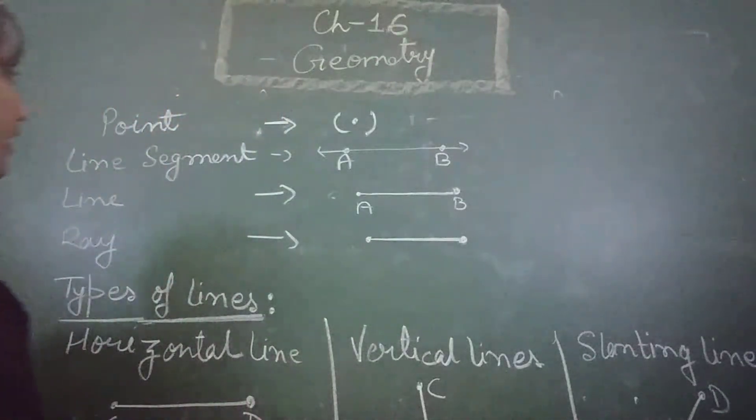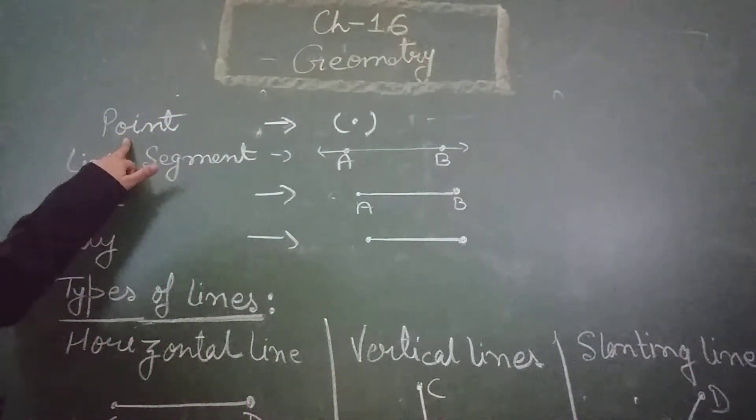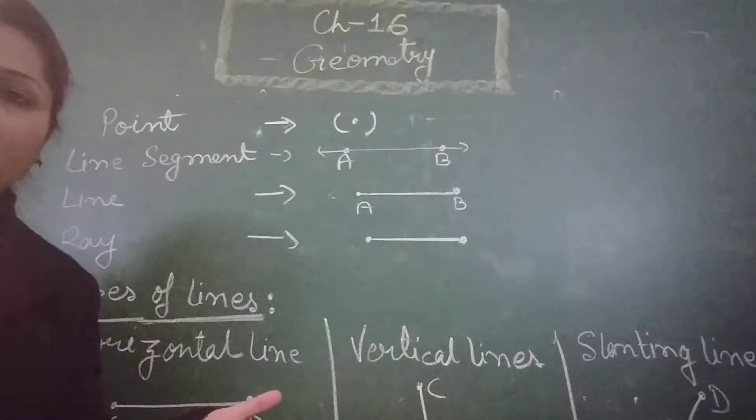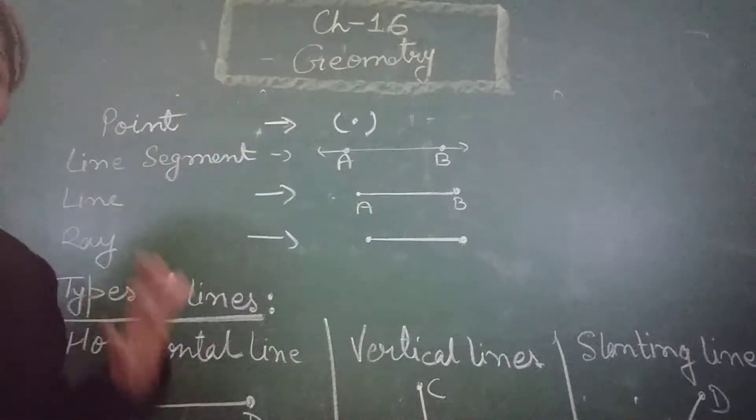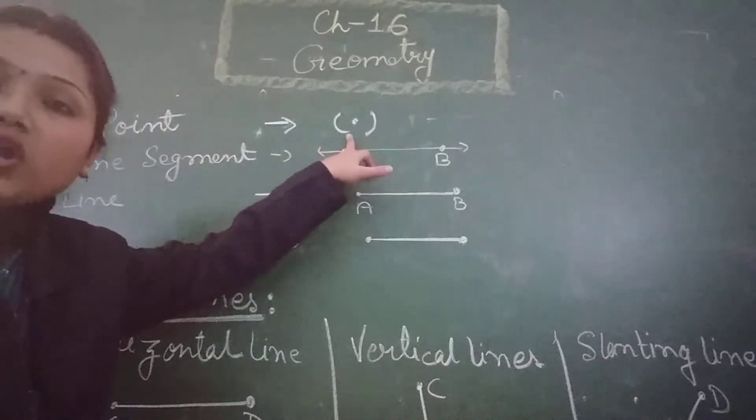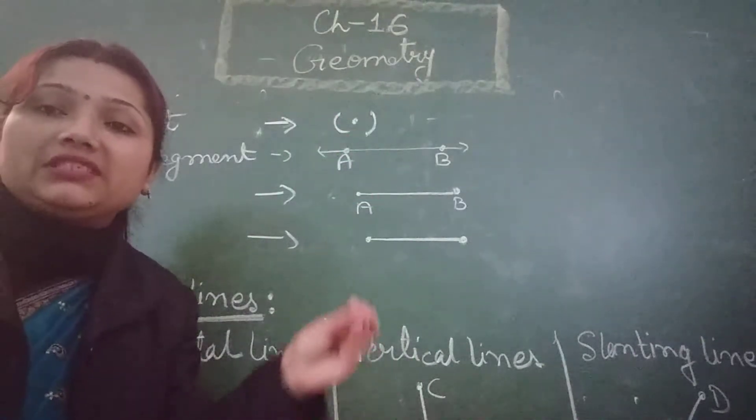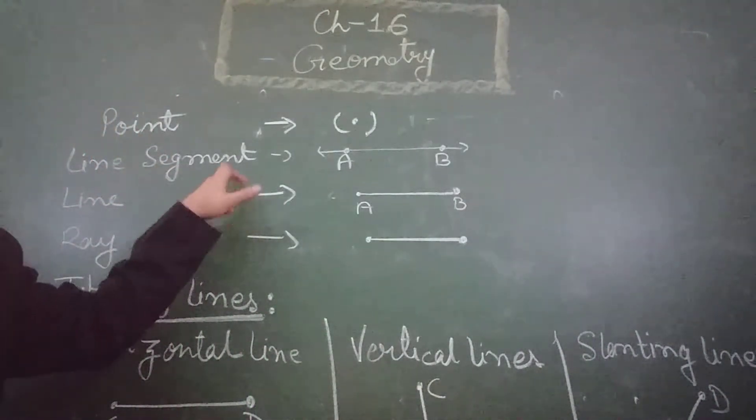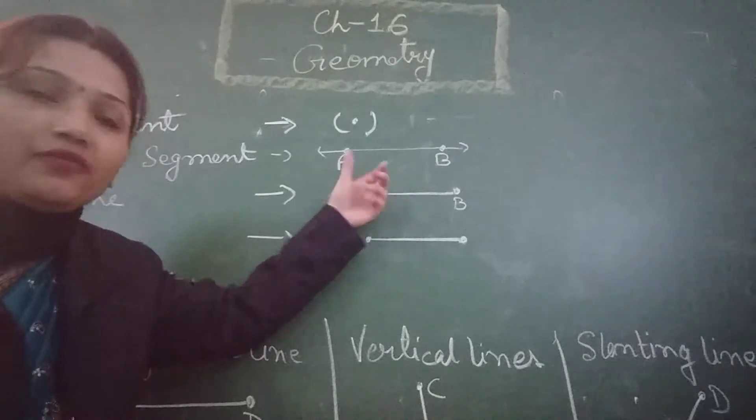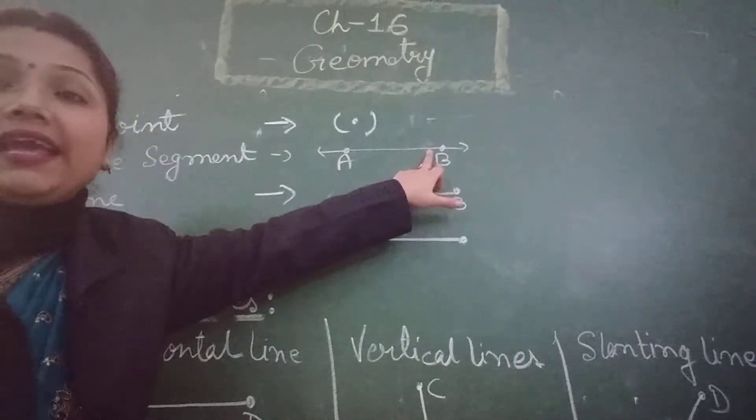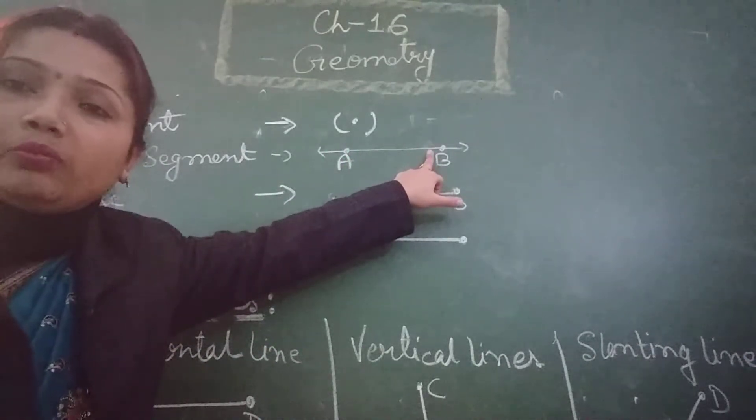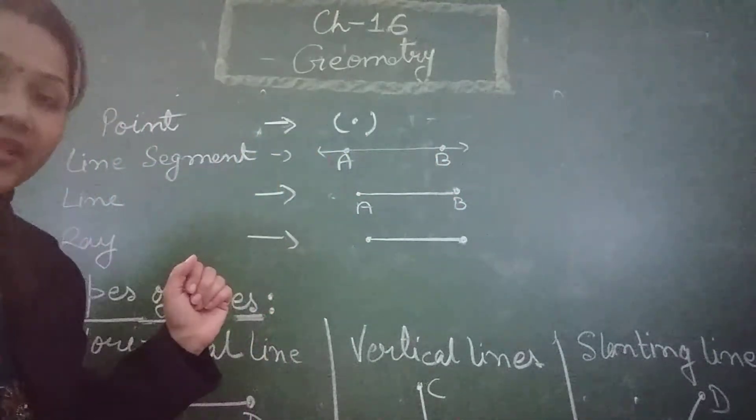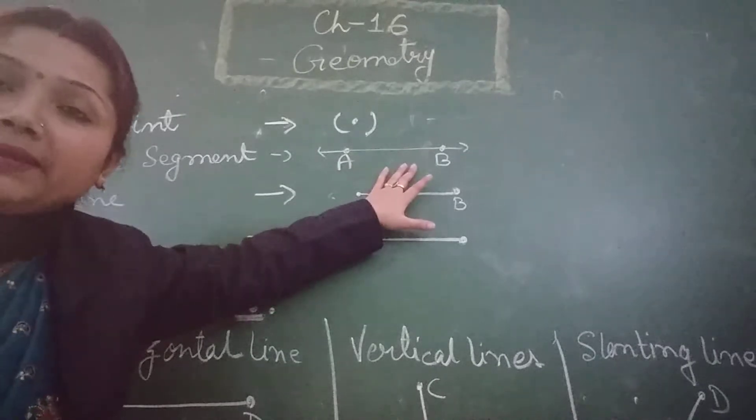So first of all, as you can see here, I have written the subtopic point. Student what is point? I think you have already known it. Point is a dot. A dot represents a point. Line segment. Line segment starts from one point and ends at another point. It has a definite length and it has two end points. It can be drawn on a plain paper.